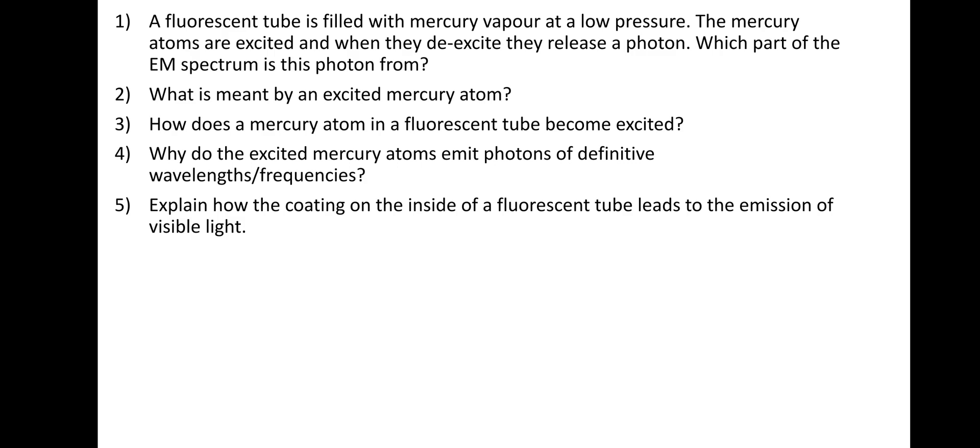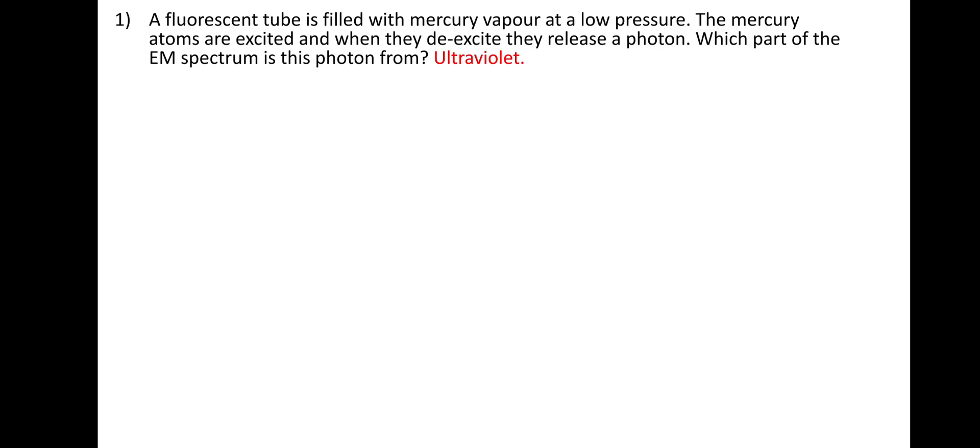So here's some questions. I'd like to pause and have a go, and then I'll take you through the answers. So first one, the fluorescent tube is filled with mercury vapor at a low pressure. The mercury atoms are excited, and when they de-excite, they release a photon. Which part of the EM spectrum is this photon from? That's the first excitation and de-excitation, and it is, of course, ultraviolet light.